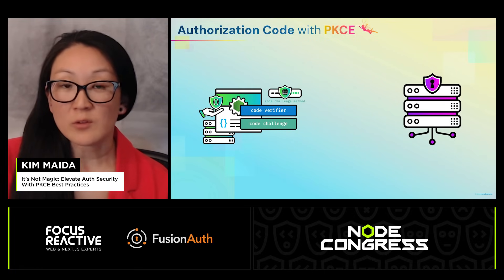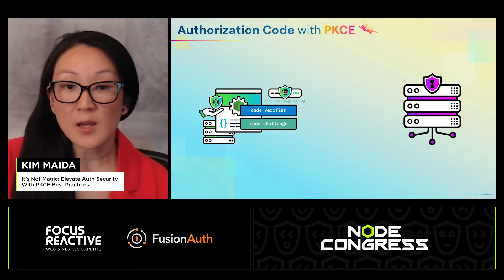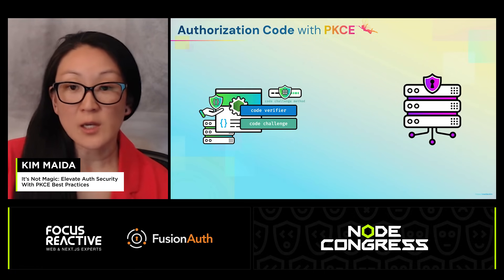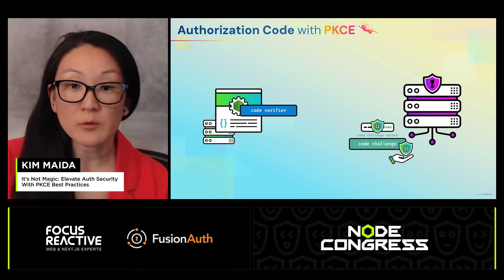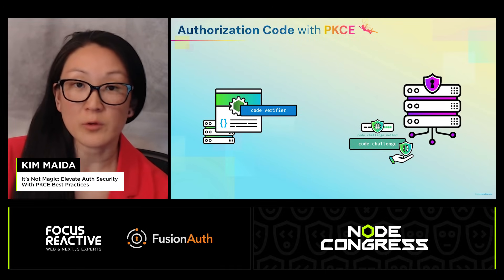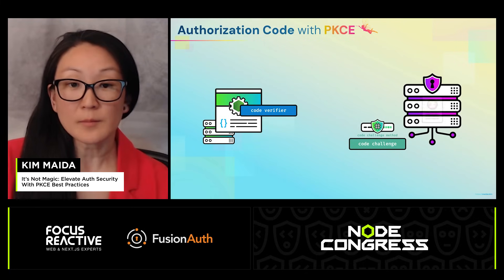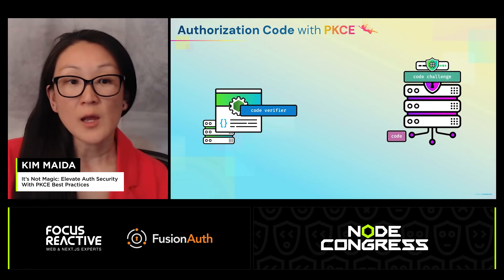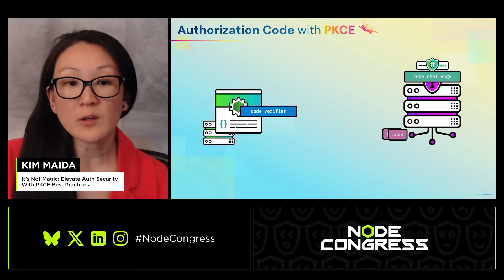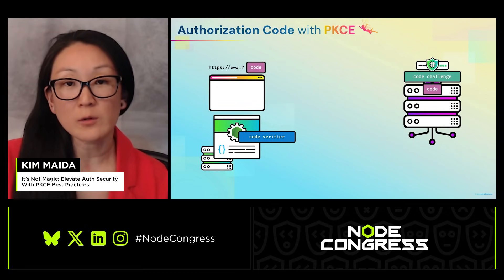We then take the authorization request and the code challenge — and optionally the code challenge method — and send this to the authorization server's authorization endpoint. The authorization server authenticates the end user, and then it generates a code which is sent to the browser in a URL query string.